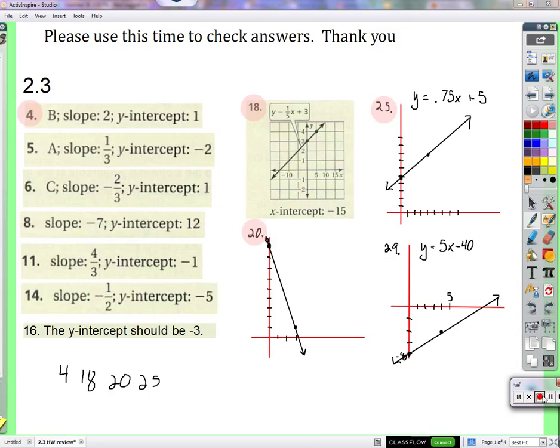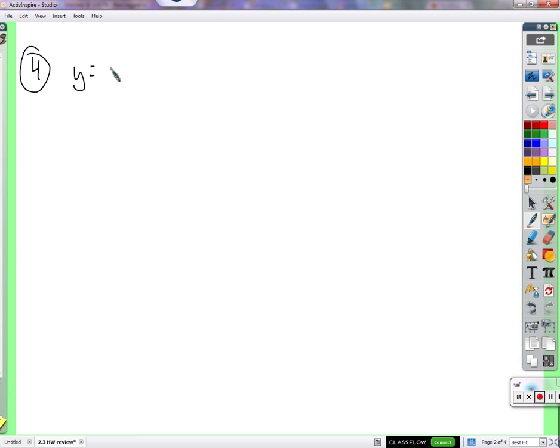Number four was part of the matching. The equation was y equals 2x plus 1. So if I'm going to match it to a graph, let's see what kind of graph I would expect to see.